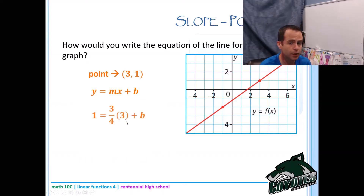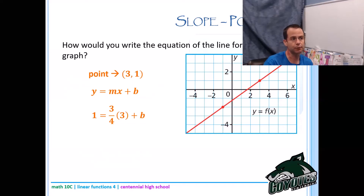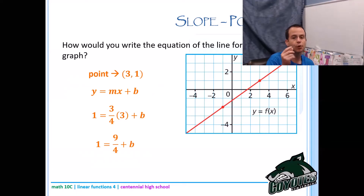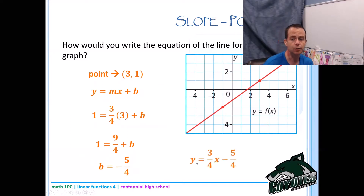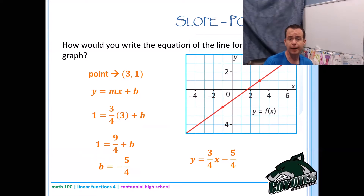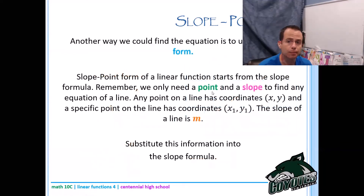Using the point 3 comma 1: plug 1 in for y, three over four for m, and 3 in for x. Three over four times three equals nine over four. Now subtract nine over four from both sides. Converting 1 to four over four, we get four over four minus nine over four equals negative five over four. So b is negative five over four, and the equation is y equals three over four x minus five over four. Now we know the y-intercept for certain.